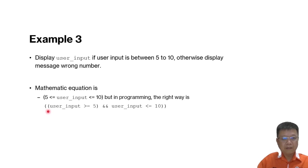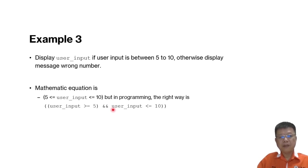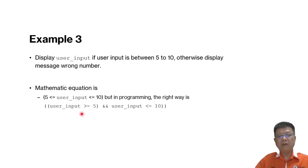The bracket starts and closes to represent the first part, followed by &&. There is a missing bracket for the second part. When preparing expressions, we must always make sure the brackets are balanced; otherwise the compiler will not compile the program.